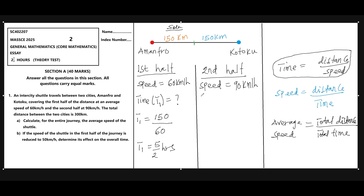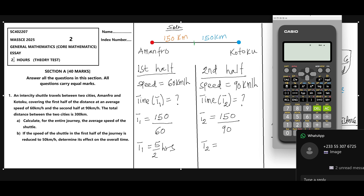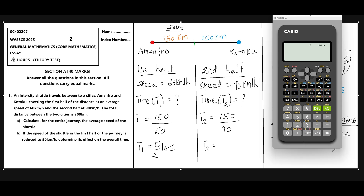For t2, the time for the second half of the journey, we again use time equals distance divided by speed. The distance for the second half is 150 kilometers and the speed is 90 kilometers per hour. So t2 = 150 divided by 90, which gives us 5/3 hours.